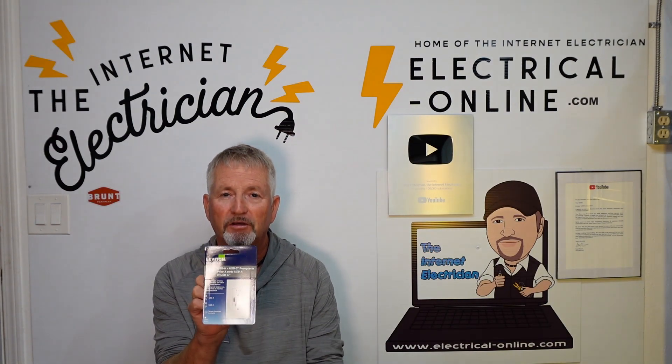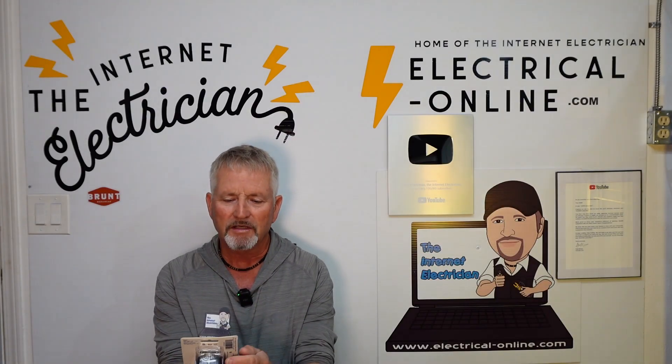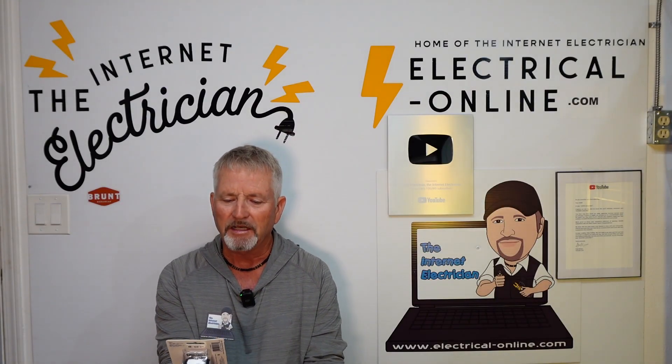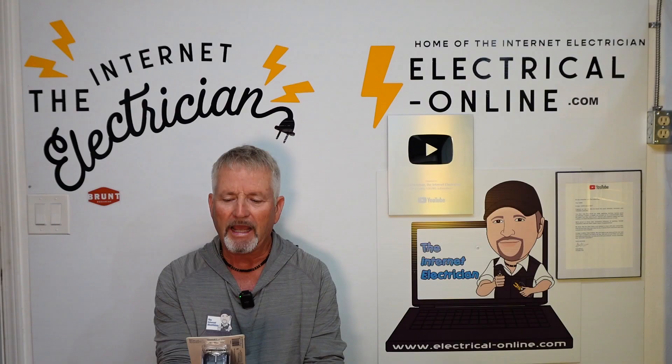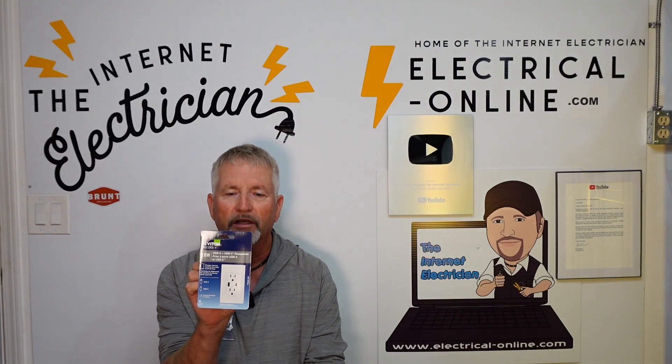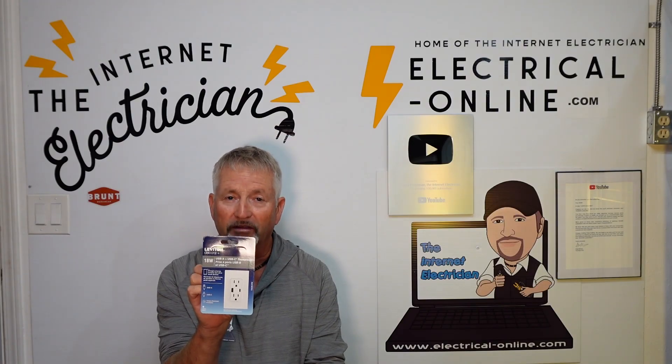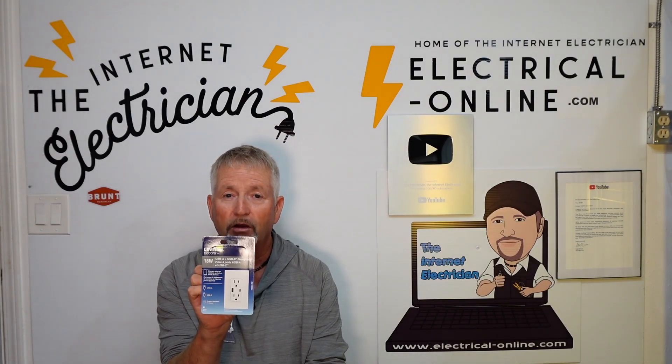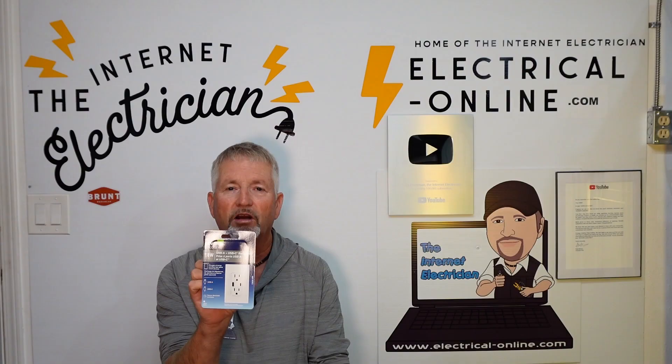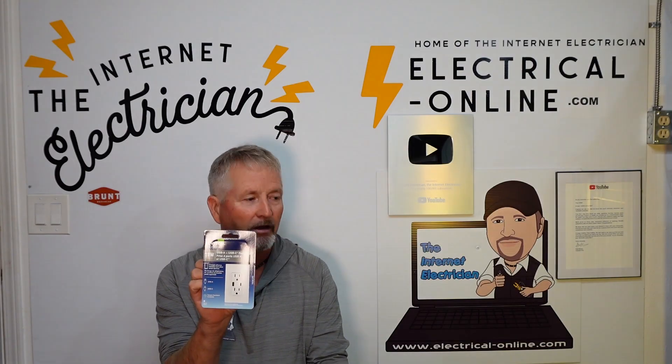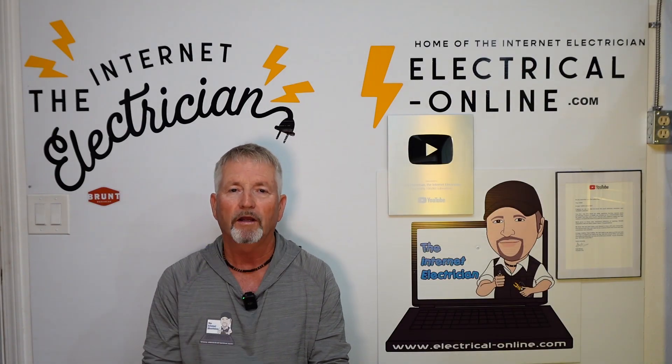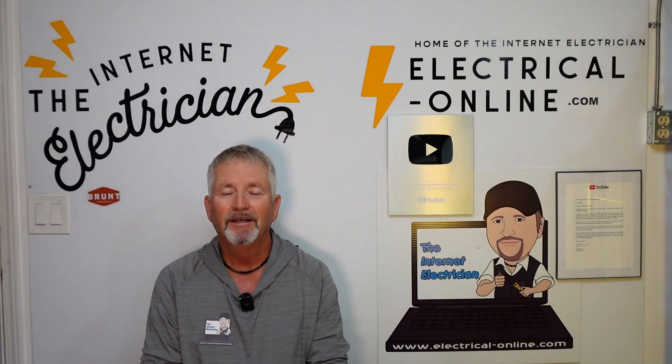So we're going to change that receptacle that we showed in the opening to this Leviton Decora. It's an 18 watt USB A and C receptacle. You can charge a USB A or a C or both at the same time as well as have your outlets free to use. So let's get started. We'll go step by step on replacing a regular Decora outlet receptacle to one of these.